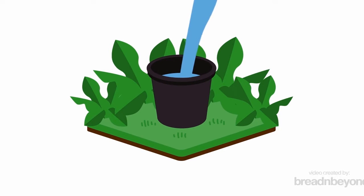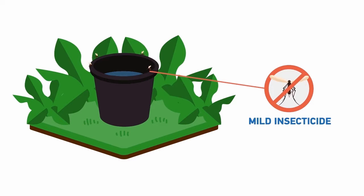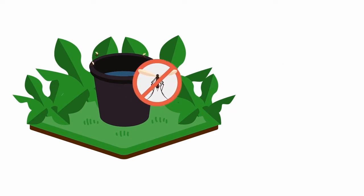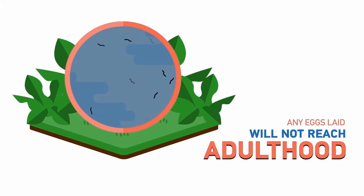Once the bait in the bottom combines with water, it attracts the female mosquito to the trap. She lays eggs, and then a mild insecticide kills her. The larvicide prevents any eggs laid from reaching adulthood.